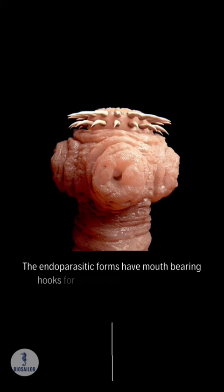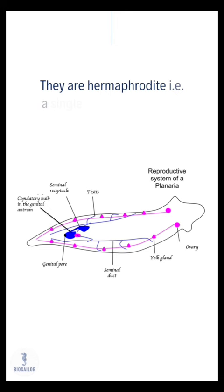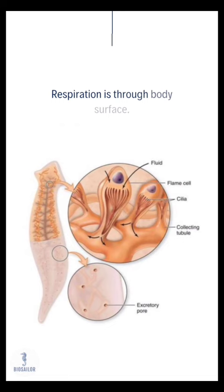The endoparasitic forms have mouth-bearing hooks for attachment and suckers for sucking nutrition from the host. They are hermaphrodite — that is, a single organism contains both testes and ovaries. Fertilization is internal. Respiration is through the body surface. Excretion occurs with the help of flame cells.